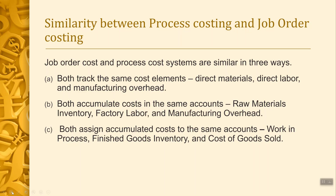When we accumulate costs, it's a debit to the manufacturing cost account — that's your raw material, factory labor, and manufacturing overhead. Number three is the flow of costs: they both assign accumulated costs to the same accounts. So they assign costs to work in process, finished goods, and cost of goods sold.